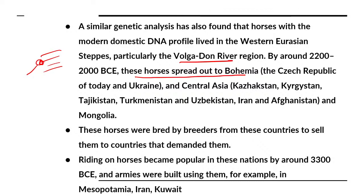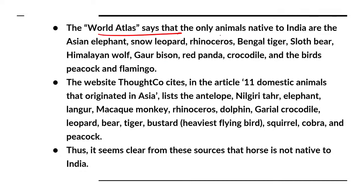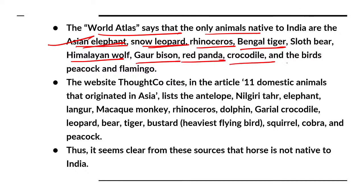By around 2200–2000 BCE, horses spread to Bohemia and other regions. They were traded, and armies of Mesopotamia, Iran, and Kuwait started using them. According to the World Atlas, animals native to India include the Asian elephant, snow leopard, rhinoceros, Bengal tiger, sloth bear, Himalayan wolf, Gaur bison, red panda, crocodile, peacock, flamingo, Nilgiri tahr, langur, macaque, gharial, and king cobra.